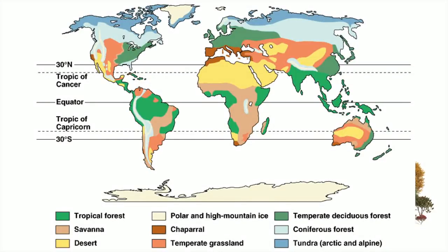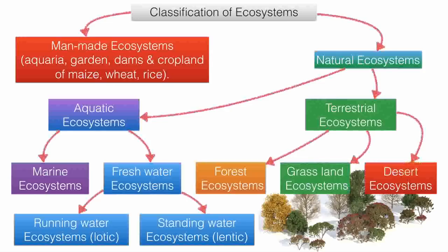Now, classification of ecosystem. Ecosystem is divided into two parts: first is man-made ecosystem and second is natural ecosystem. Man-made ecosystems are created by human beings, like aquaria, gardens, dams, and croplands. Natural ecosystems exist naturally — examples include forests and other naturally occurring environments.